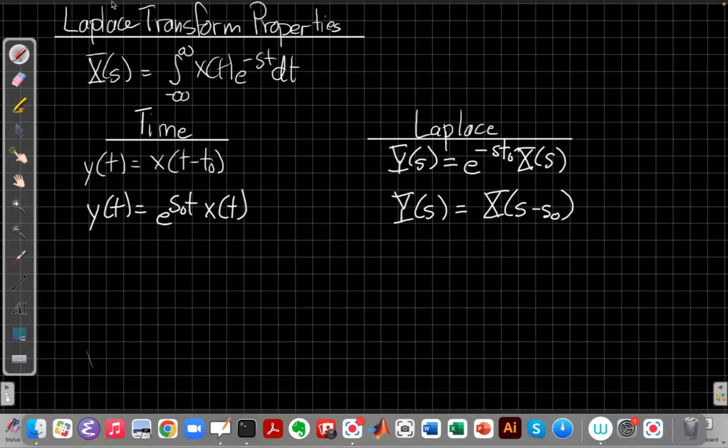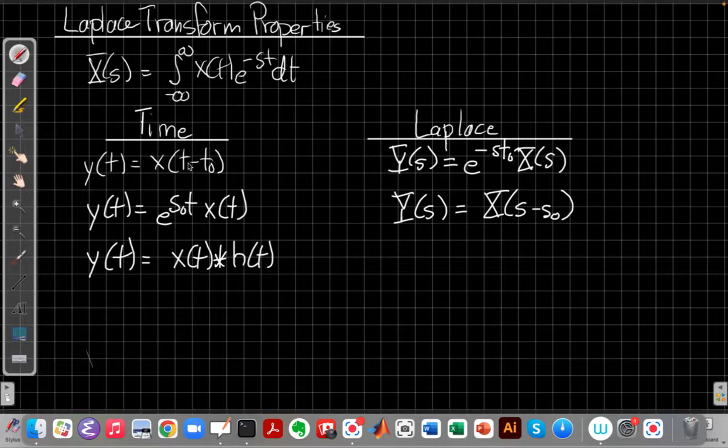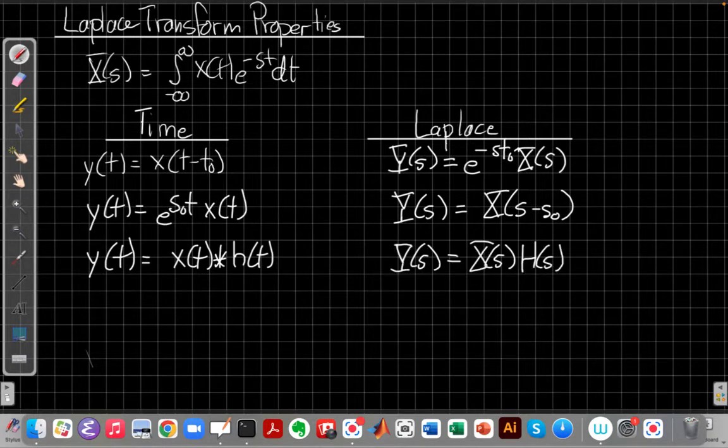What about if we convolve in time? If I convolve x of t with h of t in time, what do you think will happen in frequency? Remember, Laplace is ultimately a frequency representation. Right, I multiply in frequency. Oh, and I should be saying something about the ROC, right? That if, when I multiply by this, I have the same ROC,